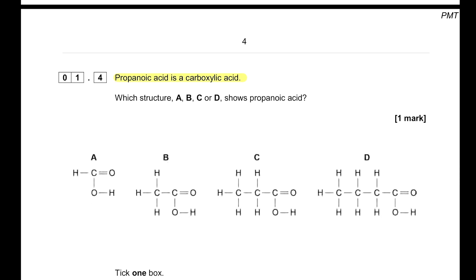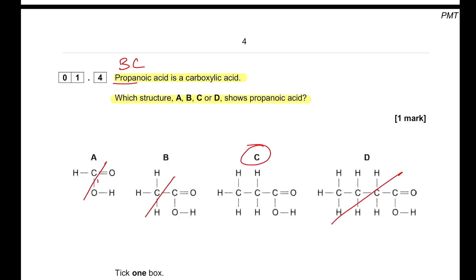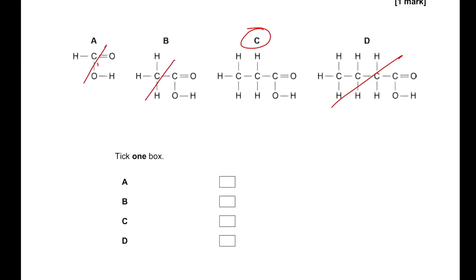Propanoic acid is a carboxylic acid — which structure shows propanoic acid? 'Prop' means three carbons, so propanoic acid must contain three carbons. We cancel the ones that have more than three carbons, so C is the answer.